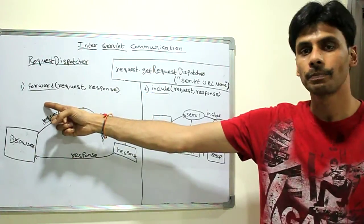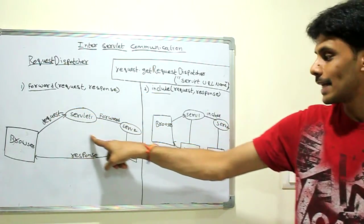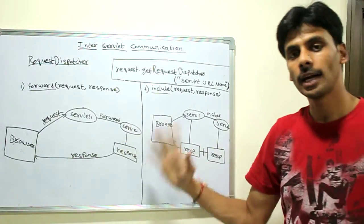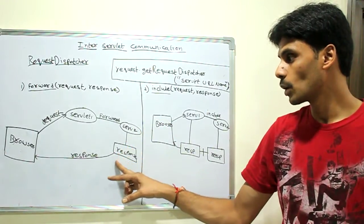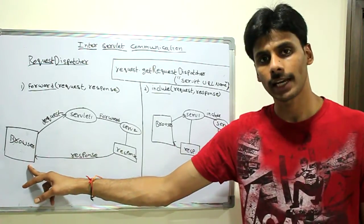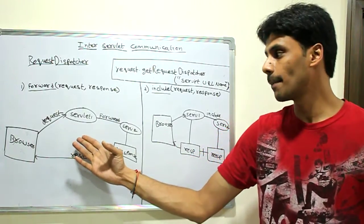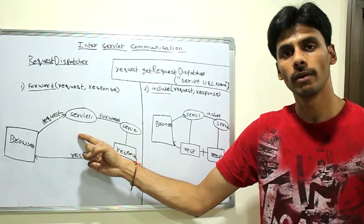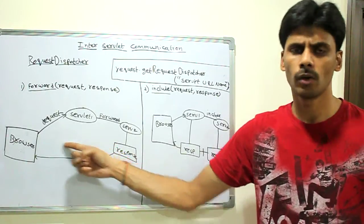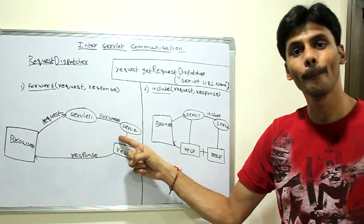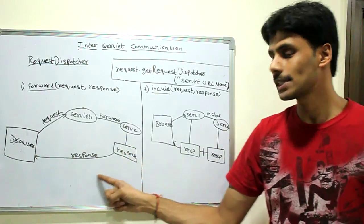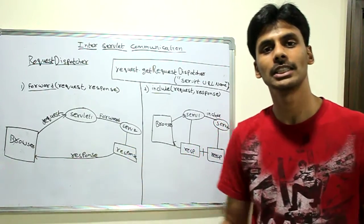In case of forward, your first servlet will send the request to the second servlet. At that point, the second servlet has the complete control and the response will go back finally from the second servlet. So in our login example, the first servlet can validate the user credentials and it will not send any output directly back. It will then delegate it to the homepage generation servlet, which will send out the homepage. It generates the HTML homepage.